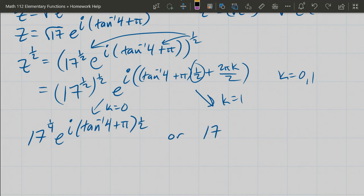So we got that same 17^(1/4), that's the radius or the magnitude, e^(i...). Now we do have k is 1 now.